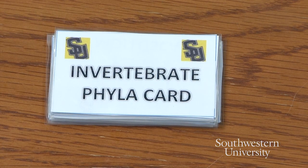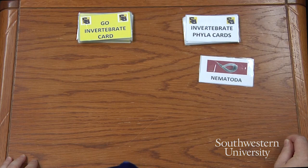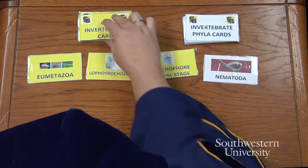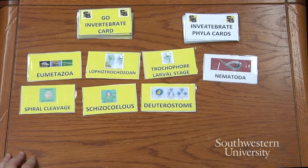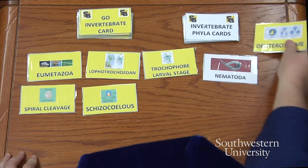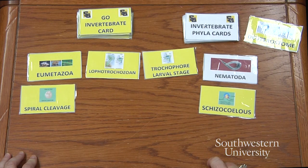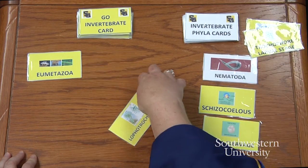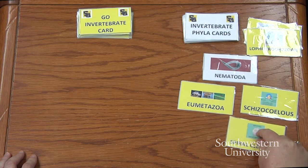The second stack of cards are the white cards, the Invertebrate Phyla cards. Each phyla we will study is represented — for example, my favorite: Mollusca. Pick a Phyla card — we have the Phylum Nematoda. Pick six Go Invertebrate cards: Eumetazoa, Lophotrochozoan, Trochophore larval stage, spiral cleavage, schizocoelous coelom formation, and deuterostome. Decide which yellow cards match your Phyla card. Nematodes are protostomes, so deuterostome doesn't match. They do have schizocoelous coelom formation and spiral cleavage. However, they are ecdysozoans, so we discard Lophotrochozoan. And they are eumetazoans — so we got three matches in our first Go Invertebrate.